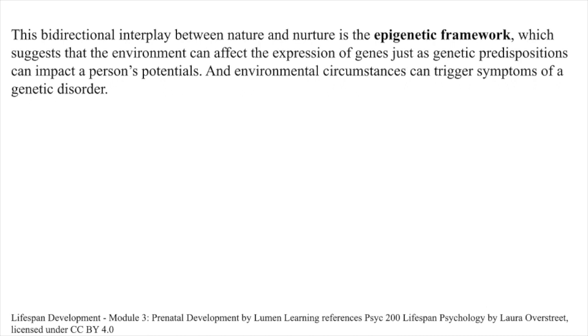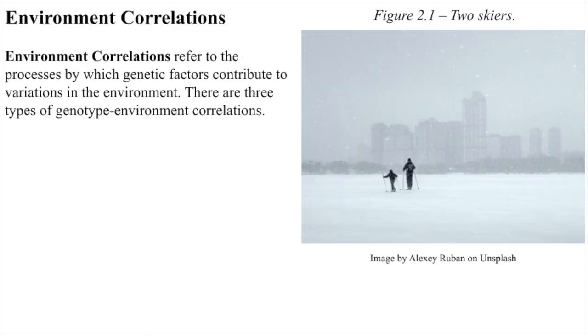It's as if one's genetic makeup sets up a range of possibilities, which may or may not be realized depending upon one's environmental experiences. For instance, a person might be genetically predisposed to develop diabetes, but the person's lifestyle may determine whether or not they actually develop the disease. This bi-directional interplay between nature and nurture is the epigenetic framework, which suggests that the environment can affect the expression of genes, just as genetic predispositions can impact a person's potentials, and environmental circumstances can trigger symptoms of a genetic disorder.